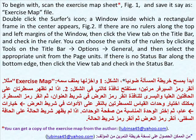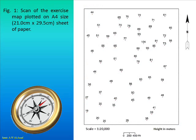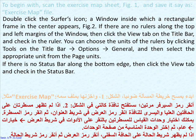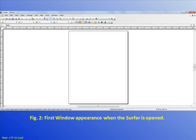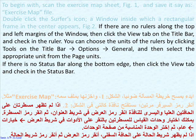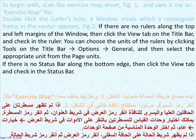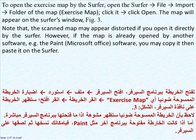To begin with, scan the exercise map sheet, see Figure 1, and save it, say as Exercise Map File. Double-click the Surfer icon; a window inside which a rectangular frame in the center appears, as in Figure 2. If there are no rulers along the top and left margins of the window, then click the View tab on the title bar and check in the ruler. You can choose the units of rulers by clicking Tools on the title bar, go to Options, then General, and then select the appropriate units from the page units. If there is no status bar along the bottom edge, then click the View tab and check in the status bar. To open the Exercise Map by the Surfer, open the Surfer, go to File, then Import, then the folder of the map, that is Exercise Map. Click it, then click Open. The map will appear on the Surfer's window, see Figure 3.